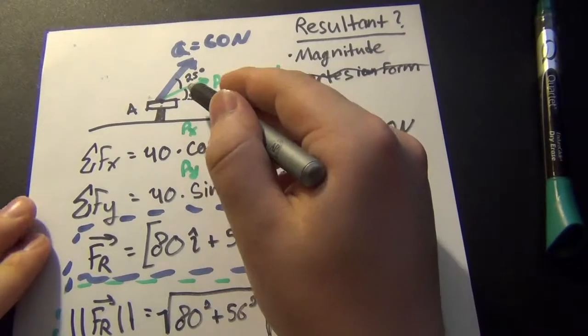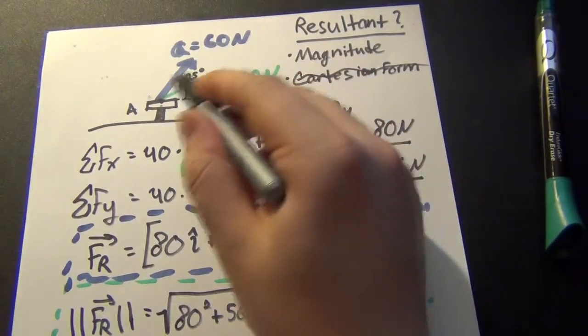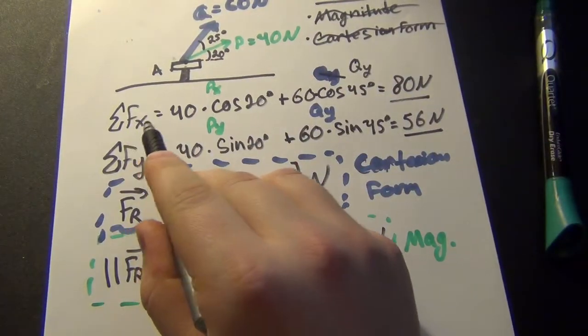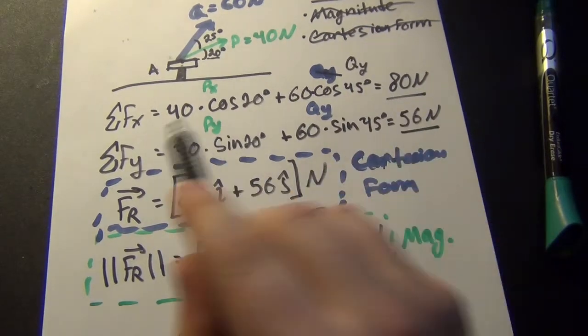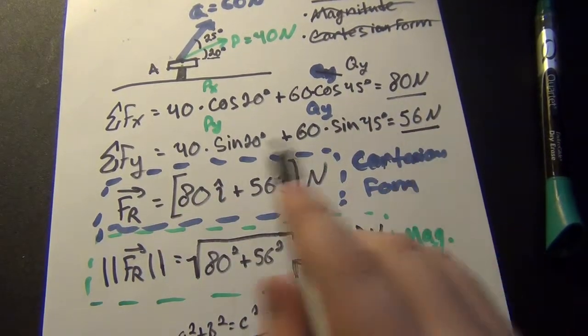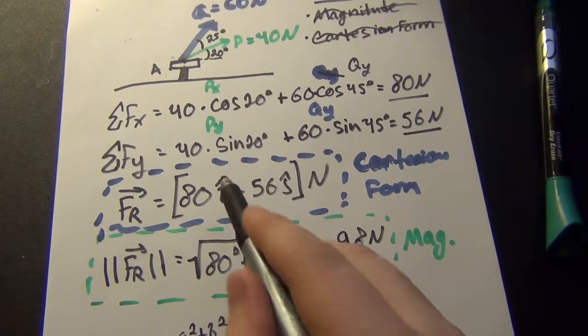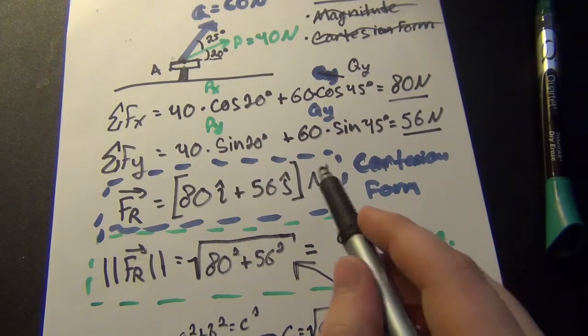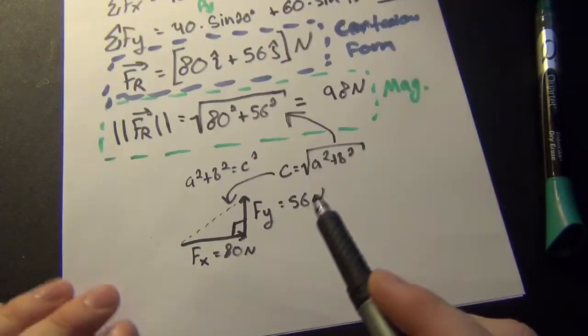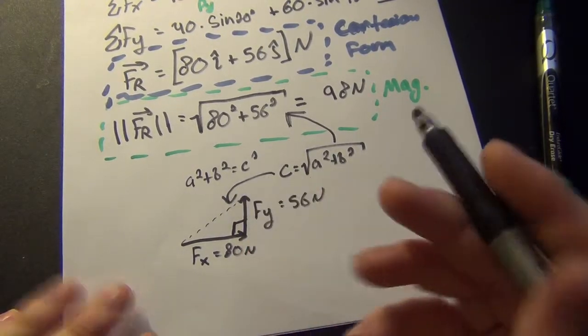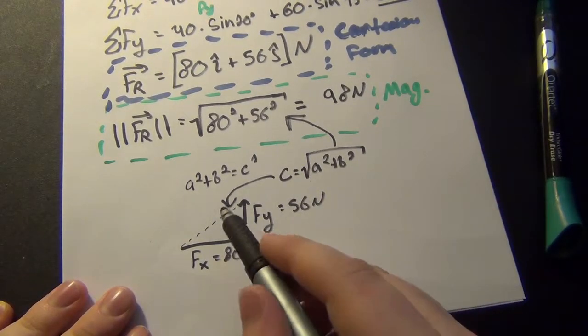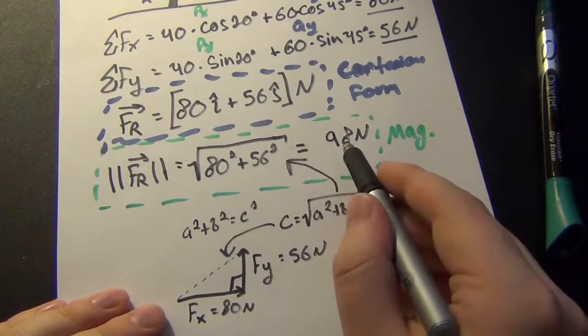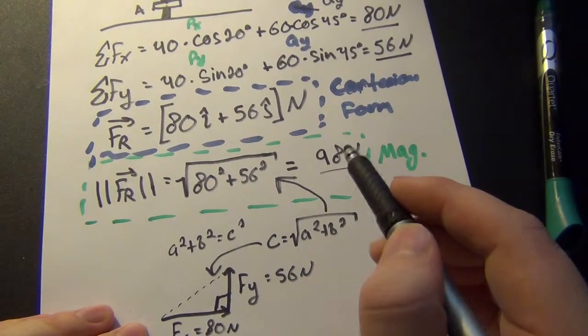Just to summarize everything, we had two forces, just acting on a singular point, going different angles. So, we broke them up into their horizontal components and added them up. We broke them into their vertical components and added them up. We wrote it in Cartesian form, which is just vector notation. So this is the direction of the x-axis. This is the direction of the y-axis, Newton. So that's the Cartesian form. And then, by using geometry or trig, you found out the, basically the hypotenuse of summing these vectors, which is the magnitude of the vector. And that came out to 98 Newtons. And that's basically it.